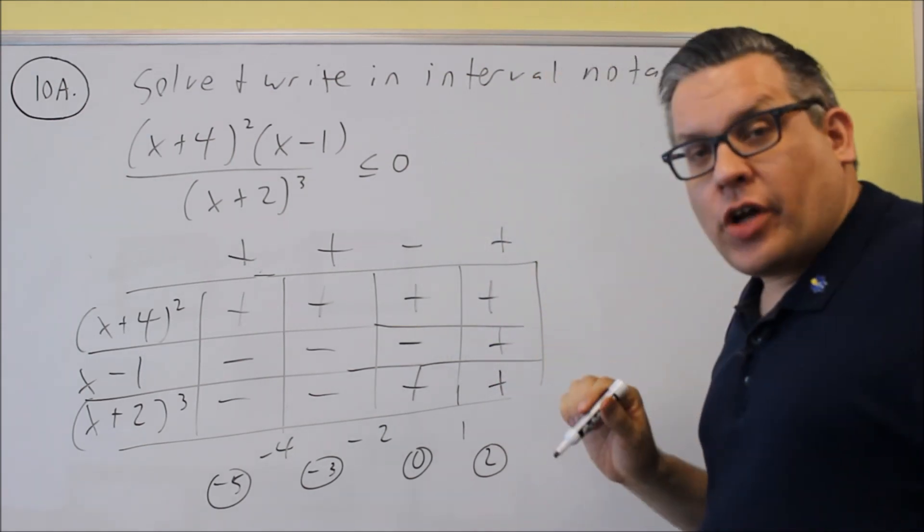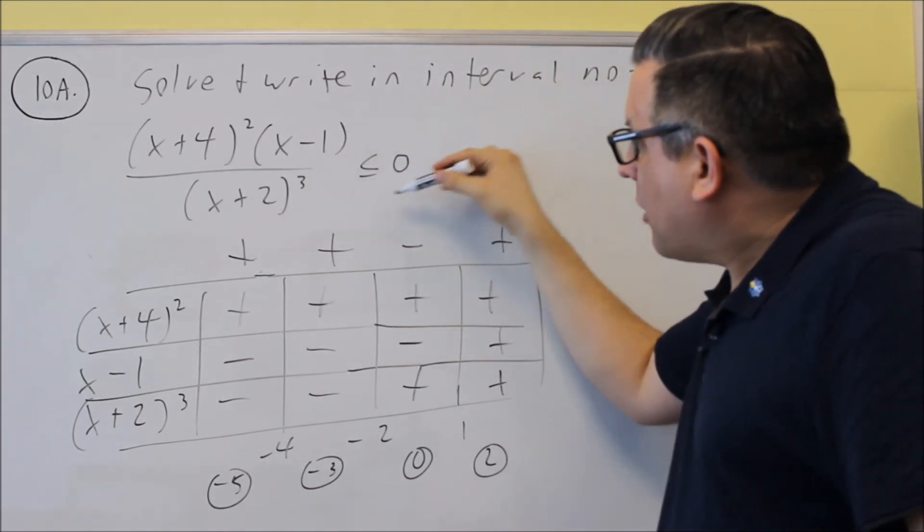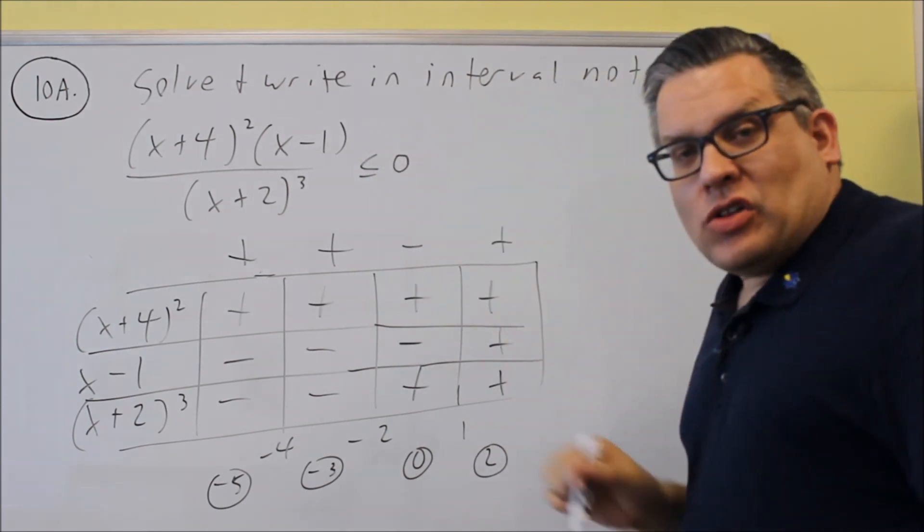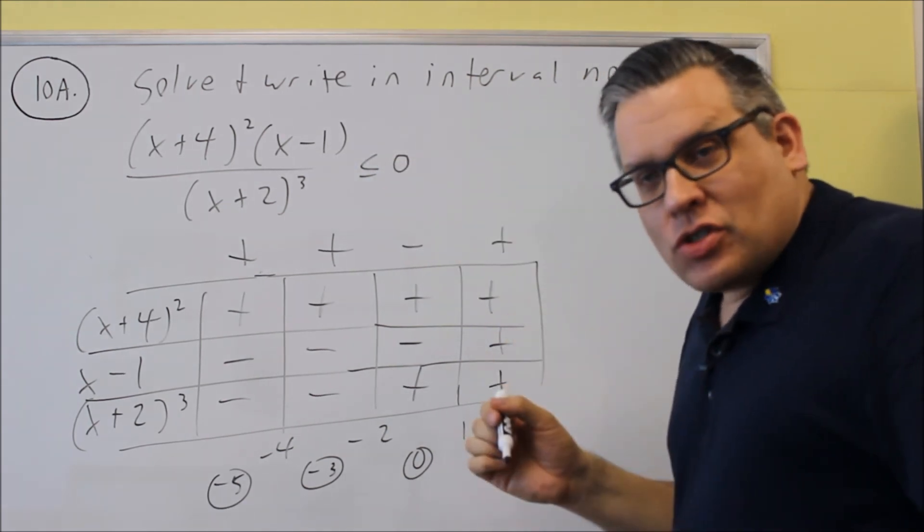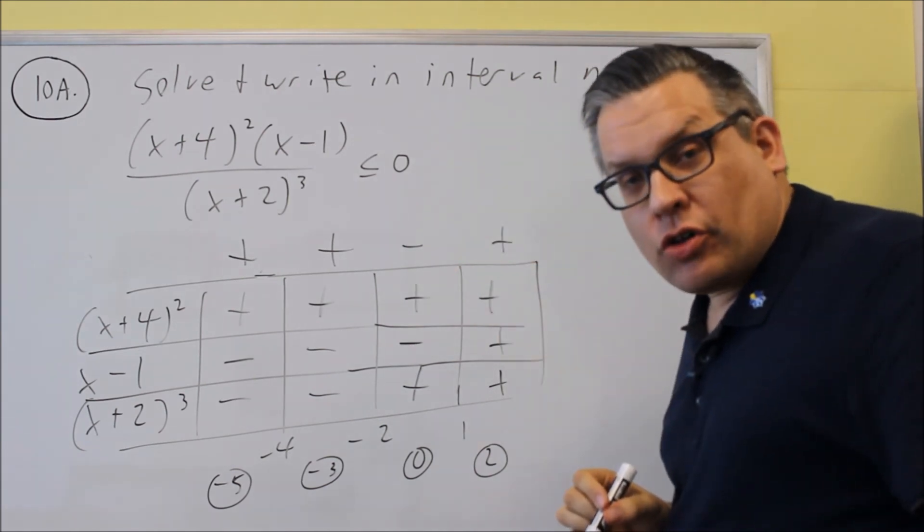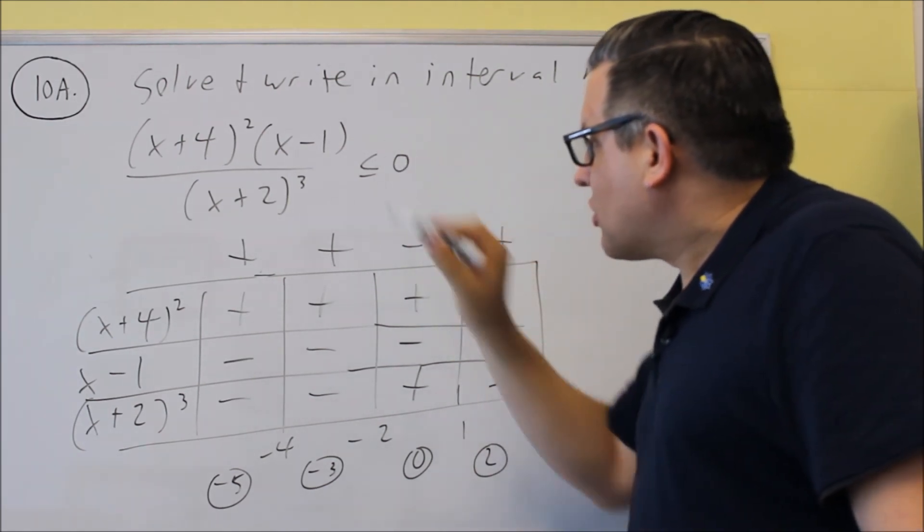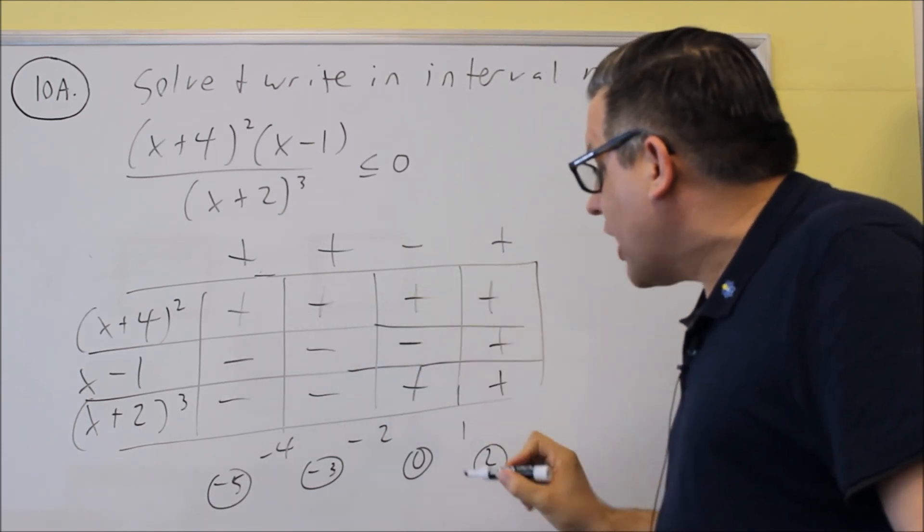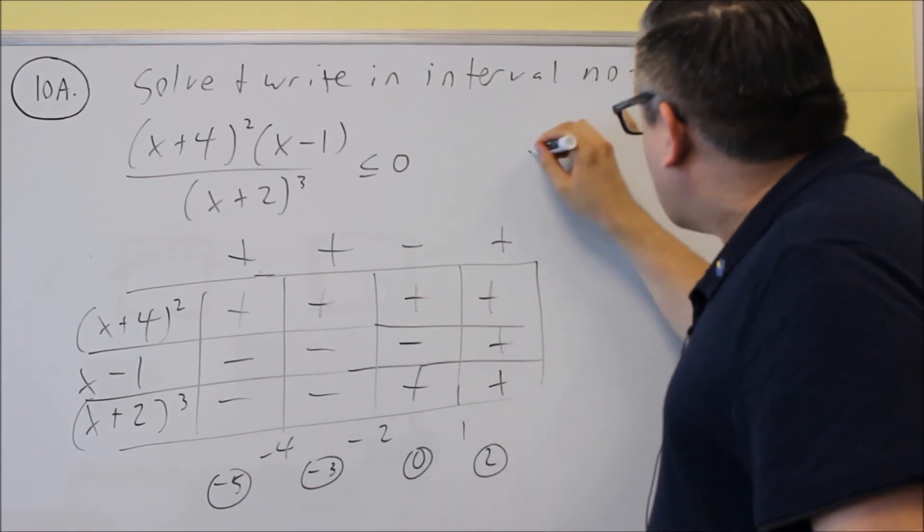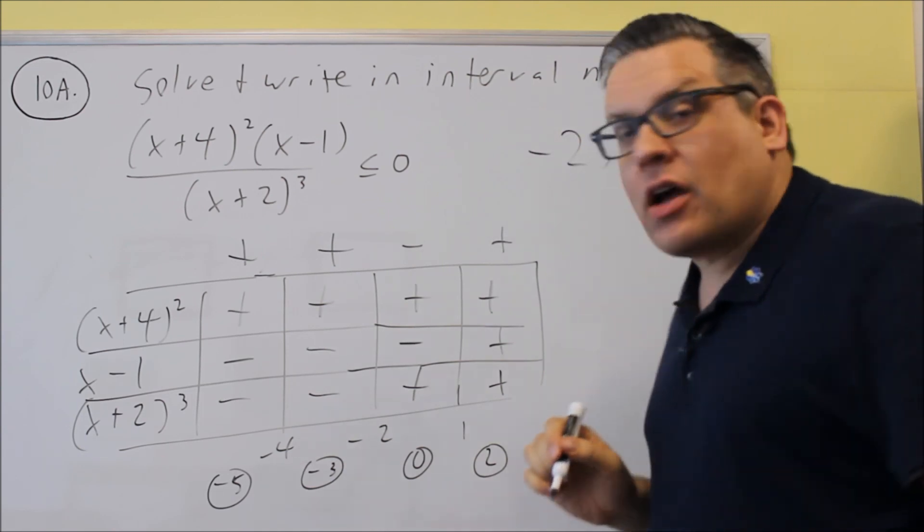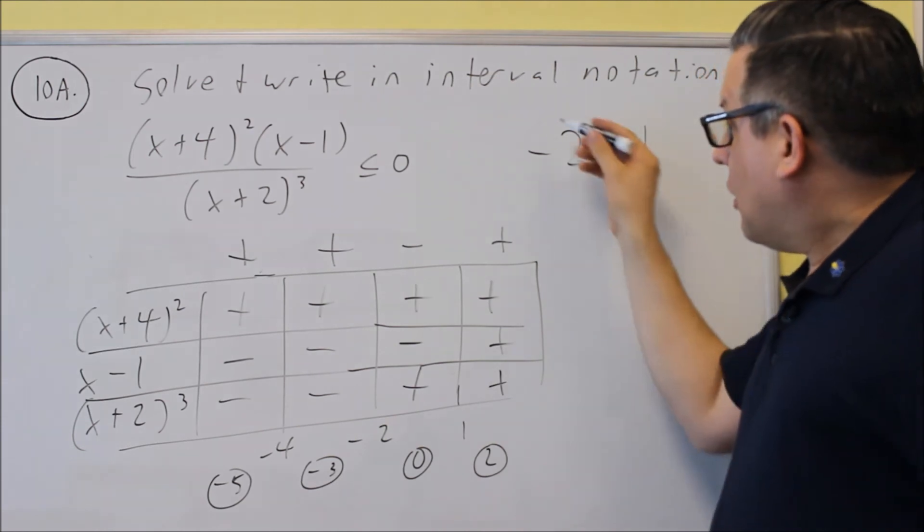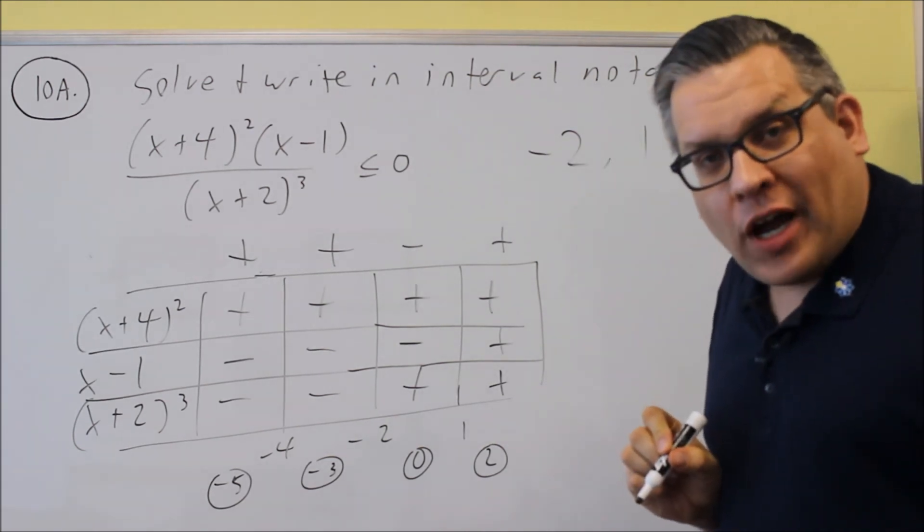So, the way we write our answer is, we take a look at what is here. If you have a less than, you're going to look for negatives. If you have a greater than, you're going to look for positives. So this is less than zero, which means I'm going to include only the region that is negative, and that's between negative 2 and 1. So I know that my answer is that I have a negative 2 and a 1 in it. Now the question is, do I put a parenthesis or a bracket?